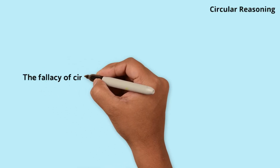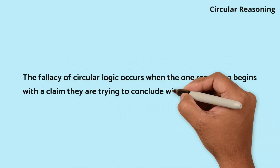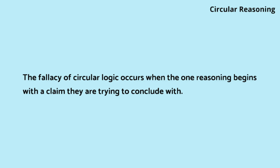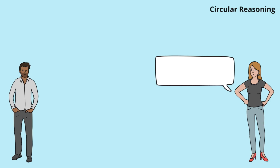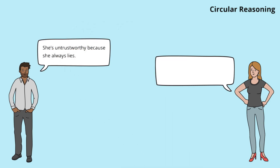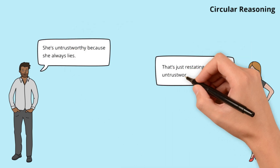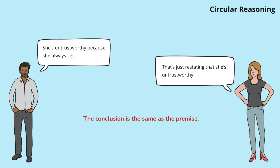Circular logic. The fallacy of circular logic occurs when the one reasoning begins with a claim they are trying to conclude with. James uses circular reasoning by restating the conclusion as evidence. Anna points out this flaw, which does not provide any actual support for the claim.